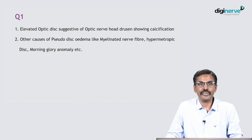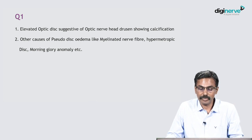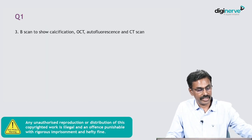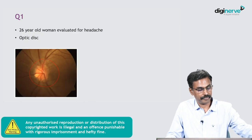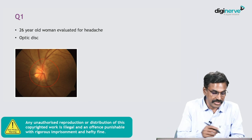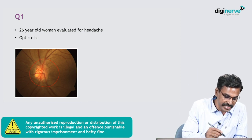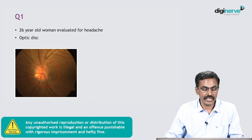The answer for the first question will be elevated optic disc suggestive of optic nerve head drusen showing calcification. Looking at the figure again, you can see tiny calcific bodies which are suggestive of calcification and drusen.